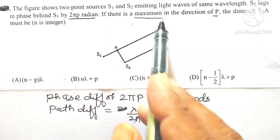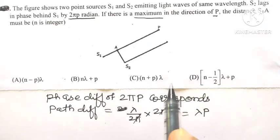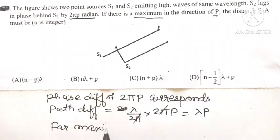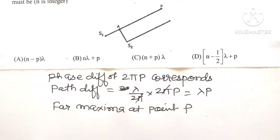Now, if there is a maximum in the direction of P, what is the condition required for occurrence of maxima at point P?